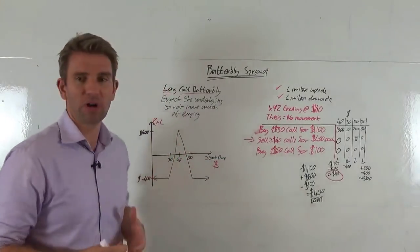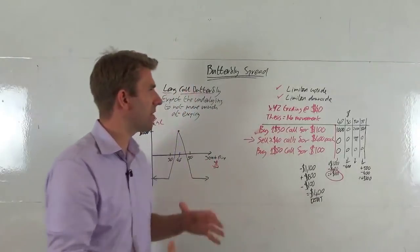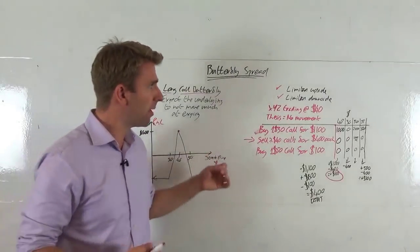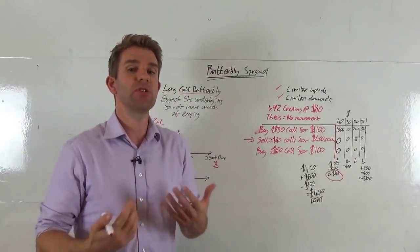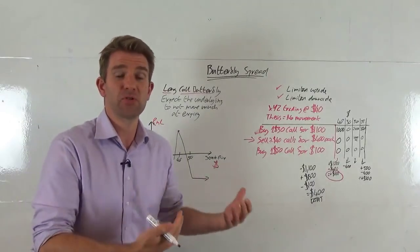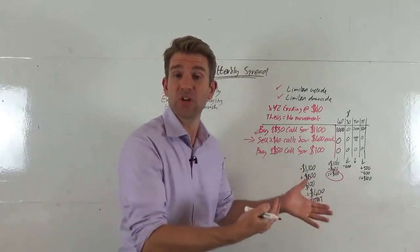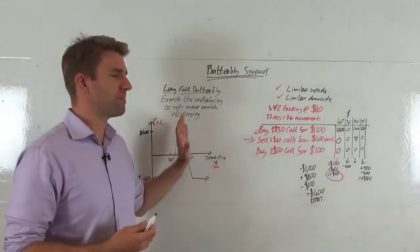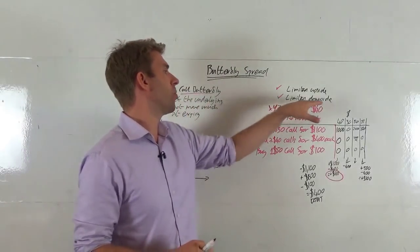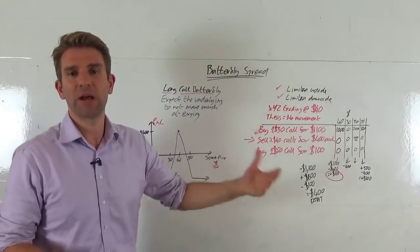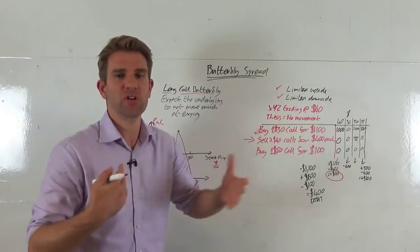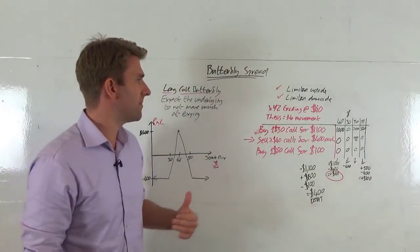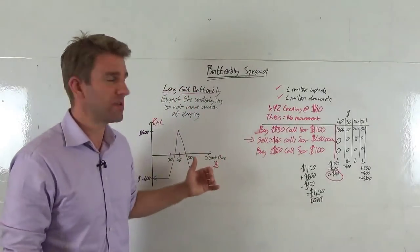How do we construct that, and what happens at different expiry prices? The main thing to point out is that we've got limited upside with this type of trade, but we also have limited downside. It's a commercial decision whether this suits us or not. This specific strategy caps the risk but also caps the reward. So if we say XYZ stock is currently trading at $40, the thesis is there's no movement — it's going to stay where it is at expiry.